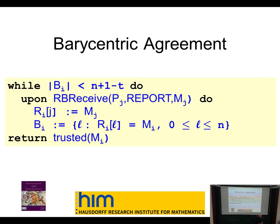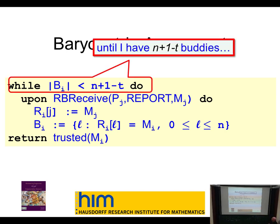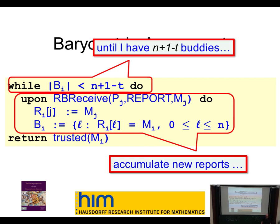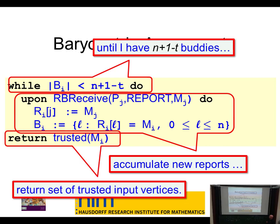Reports are either new vertices heard directly or vertices sent to me indirectly by others. Most are from good processes; t of them might be trying to frustrate me. I record messages, build the set of buddies, and keep sending the same thing over and over, accumulating new information. Eventually — this is what the proof shows — you reach a stable point where you've learned everything you're going to learn and everyone else has too. You can eventually detect this and then you're done.